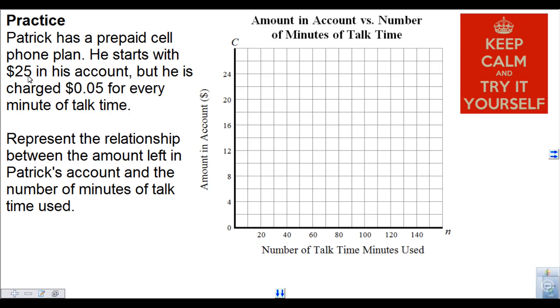All right. He starts with $25, so at zero minutes it's at 25. So if that's 20 and that's 24, the middle number must be 22. So this is going up by 2 every time. So 26 is over here. I'm going to have 25 right in the middle there.